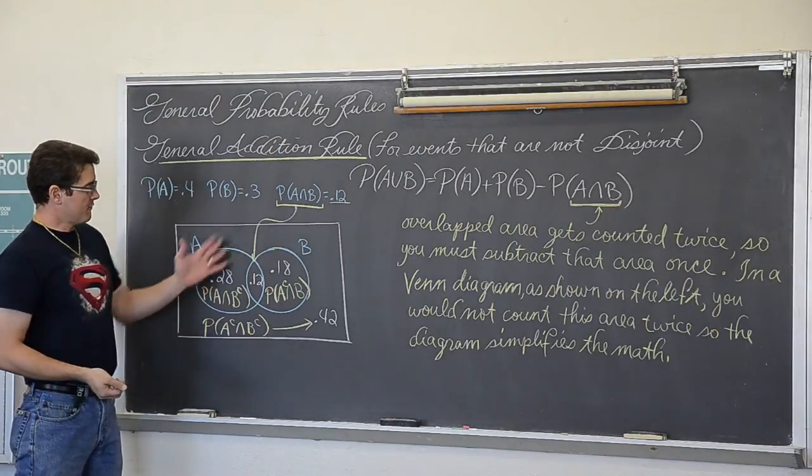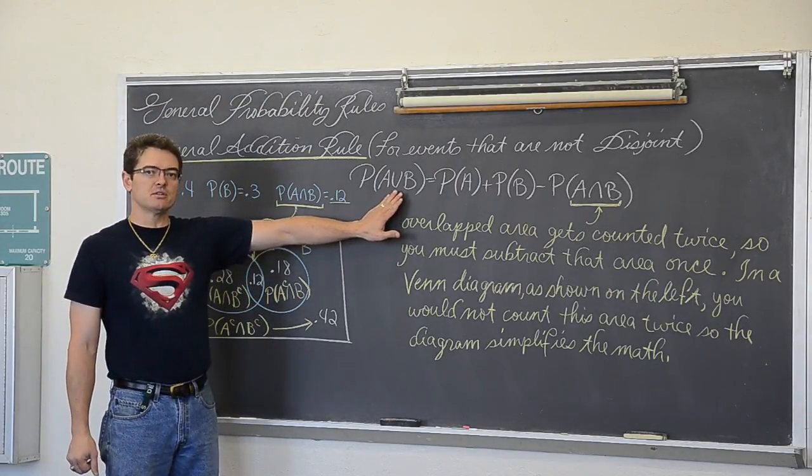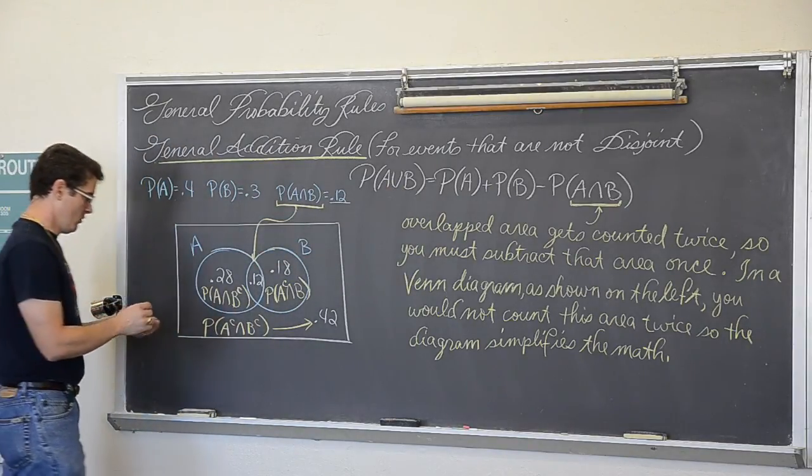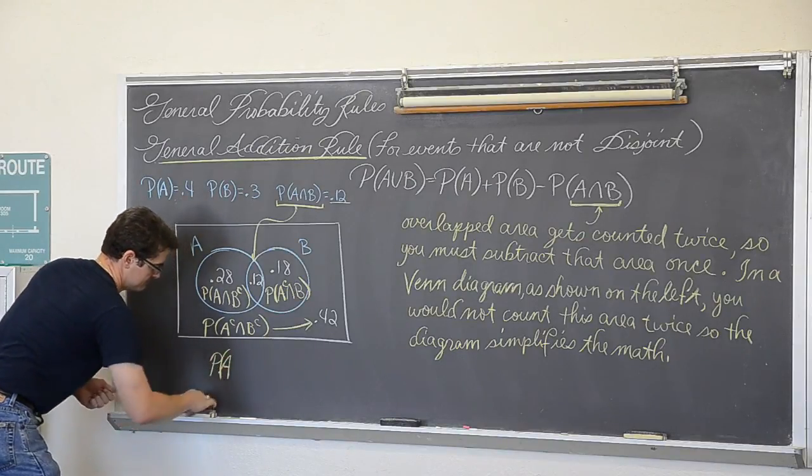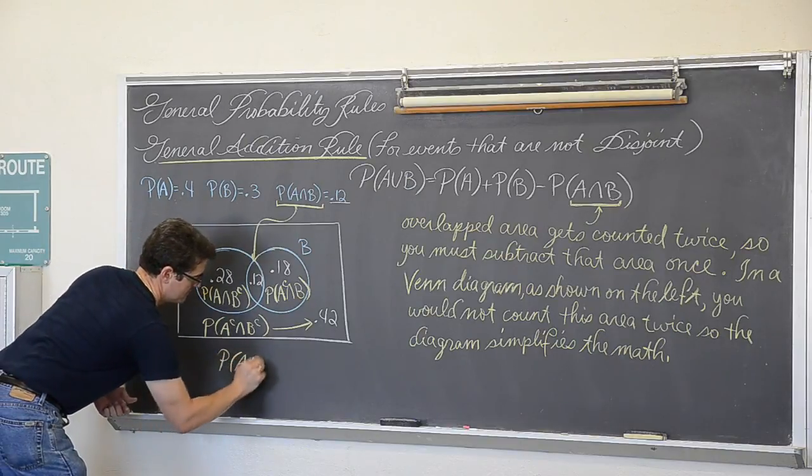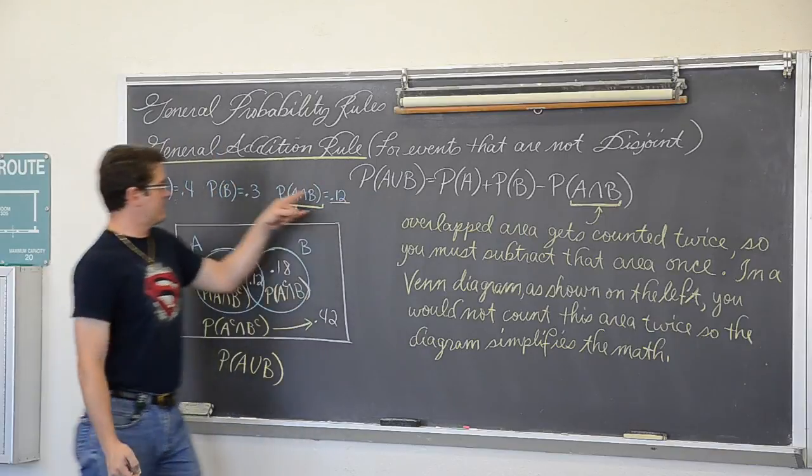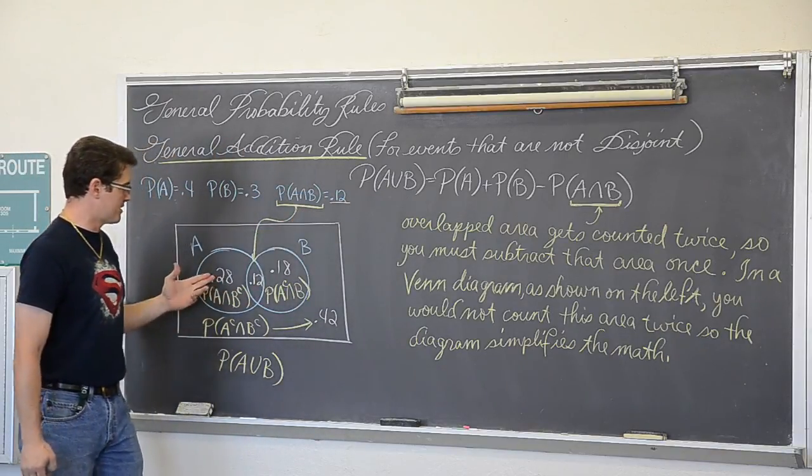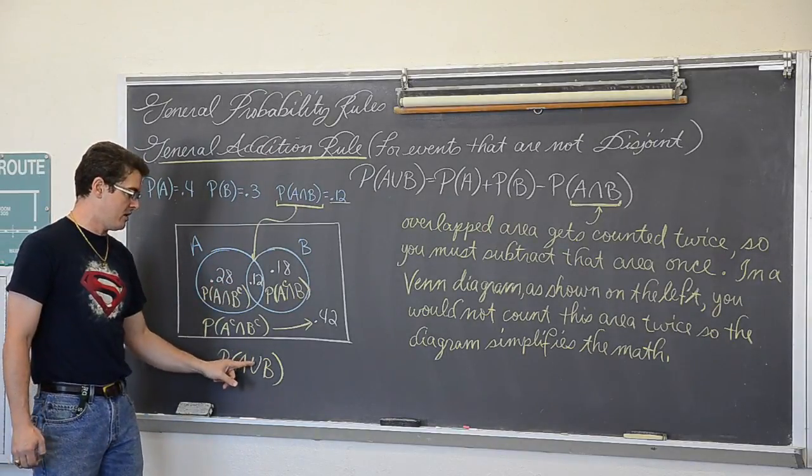What is the probability of neither one of them occurring? Well, that is 42 percent. So from setting up this Venn diagram, I can answer a lot more questions than just what is the probability of A or B. By the way, I didn't even answer that question yet.